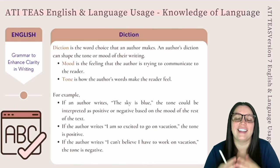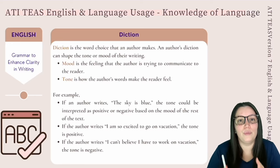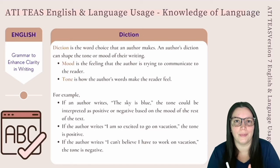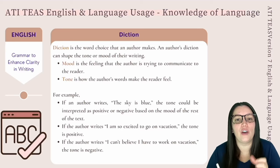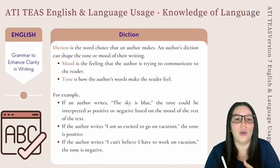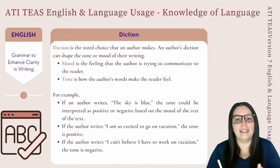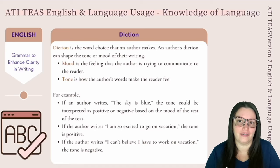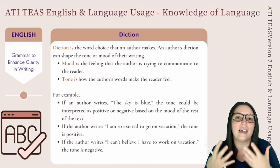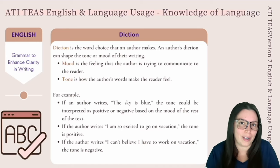Diction is the word choice that an author makes. An author's diction can shape the tone and mood of the writing. Mood is the feeling that the author is trying to communicate to the reader, whereas tone is how the author's words make the reader feel. For example, if the author writes the sky is blue, the tone can be interpreted as positive or negative based on the mood of the rest of the text. I am excited to go on vacation sounds positive. But I can't believe I have to work on vacation is very negative. You will need to identify differences between the author's mood and tone based on their word choices.